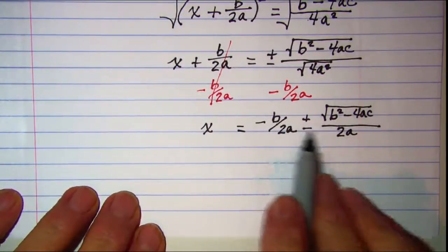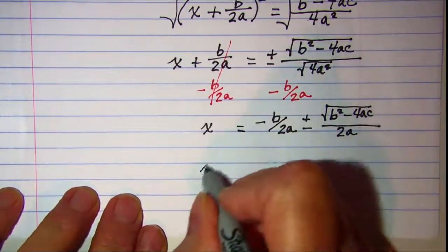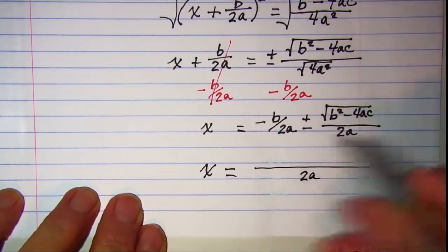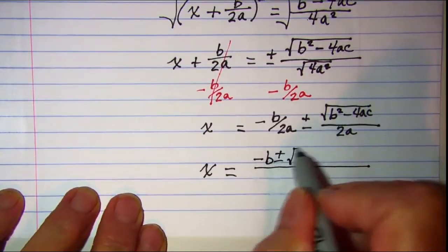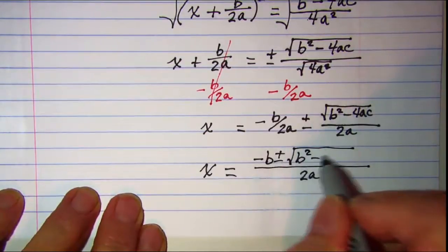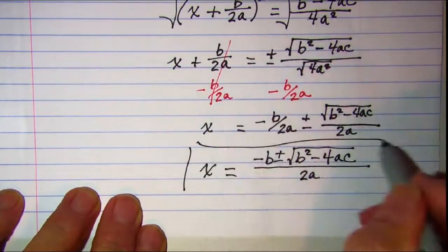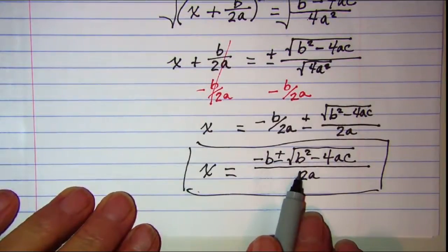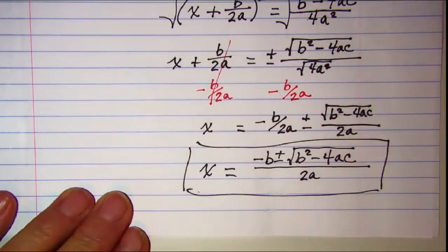So now I have a common denominator, so I'm going to put these two terms together. I have x equals negative b plus or minus the square root of b squared minus 4ac, all over 2a. This is the quadratic formula, and you use this formula to solve a quadratic equation of the form ax squared plus bx plus c equals zero.